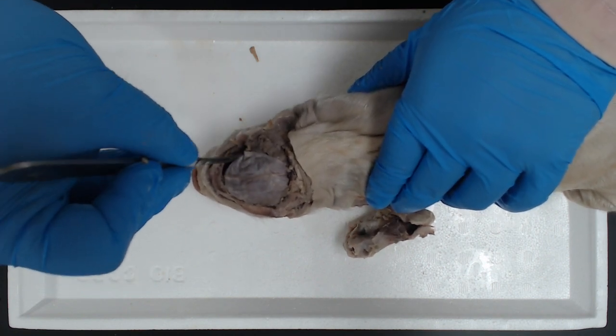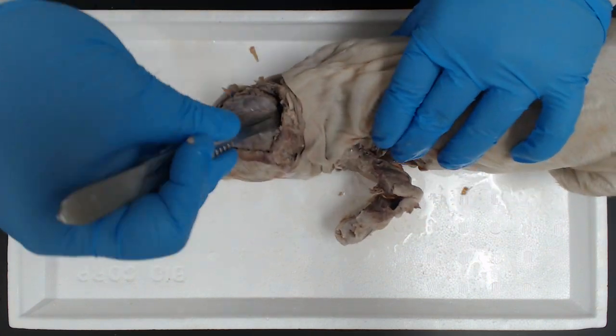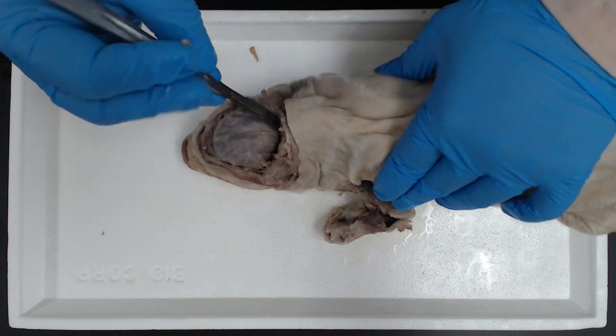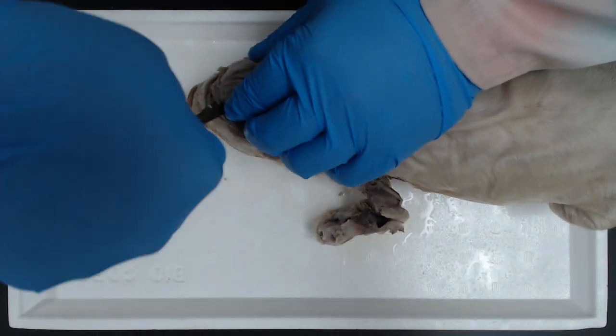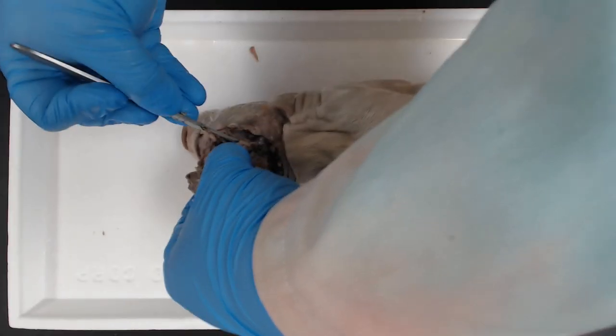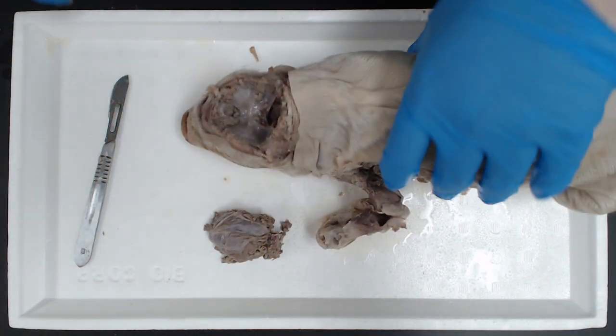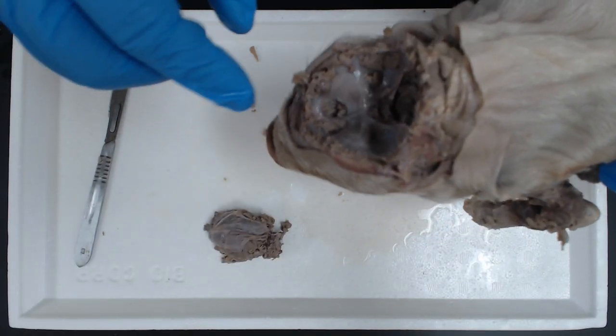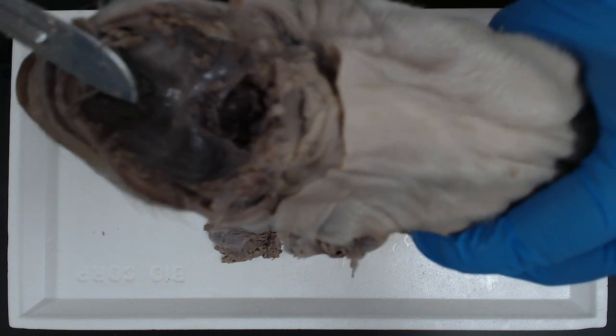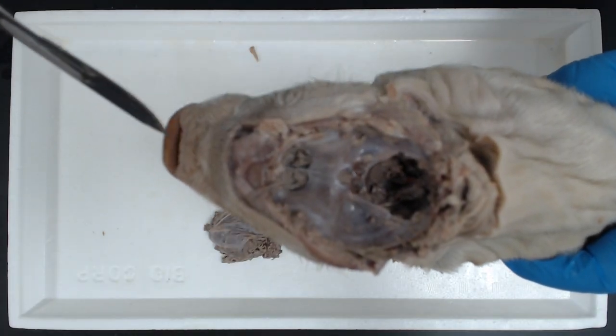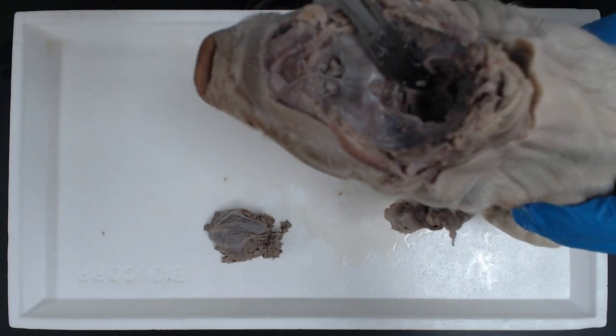And then in the back, we need to free it up from the spinal cord. So now, brain's been removed. You can see up front where we would have our olfactory nerves feed in through the cribriform plate. Then in the back, we can see where the foramen magnum and the brain stem would then leave the cranium to go into the spinal cord.